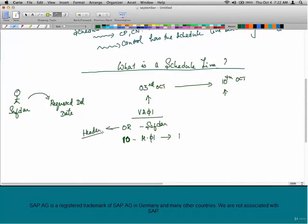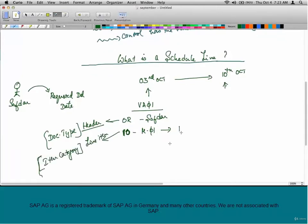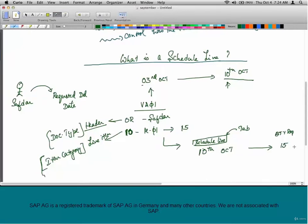So, we have the header controlled by the document type OR and the line item controlled by the item category and if you go to the line item, you have a section called schedule lines. There is a separate tab called schedule lines and there you would have information on the schedule of delivery. Say the quantity at the line item level is 15 and what is the date the customer asked for? It's the 10th of October and the quantity requested by the customer is 15.